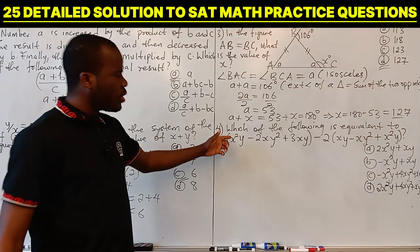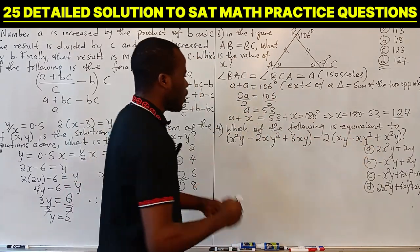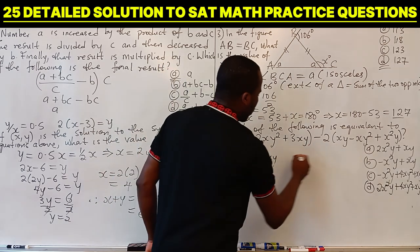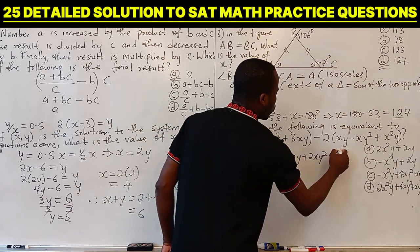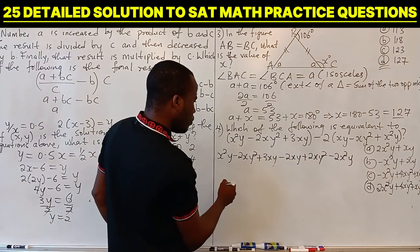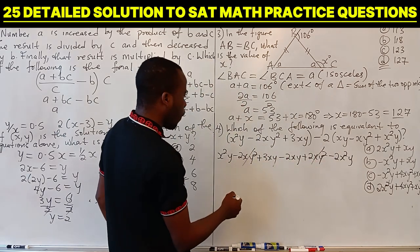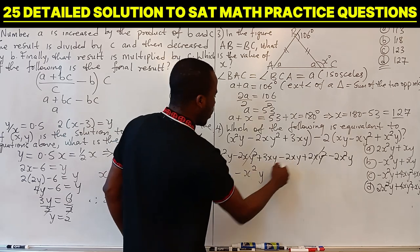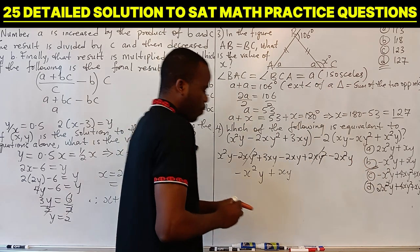Question 4 asks which of the following is equivalent to the given expression. Opening the brackets gives X²Y minus 2XY² plus 3XY plus 2XY² minus 2X²Y. The terms minus 2XY² and plus 2XY² cancel to zero. X²Y minus 2X²Y is minus X²Y, and 3XY minus 2XY is plus XY. The answer is B.